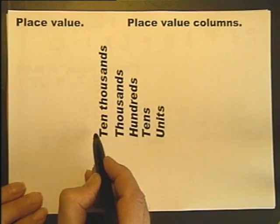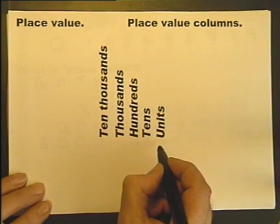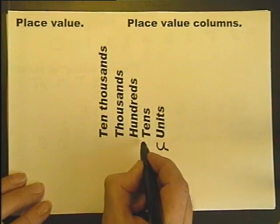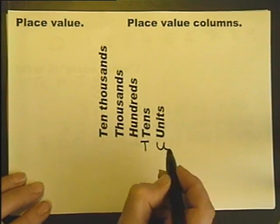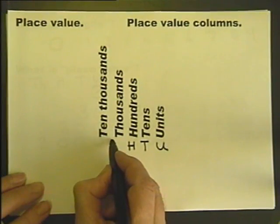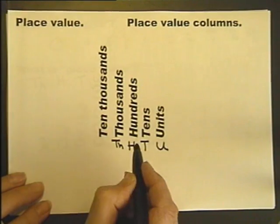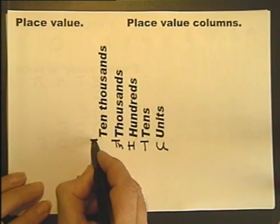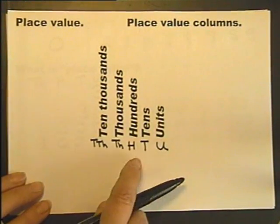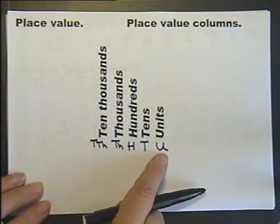We can abbreviate these columns, in other words write them shorter, by just using some letters. So instead of units, we can write just the letter U. Tens, the letter T. Hundreds, the letter H. Thousands, the letter T and an H. And tens of thousands, well we'll have to do it something like this: T, T, and an H. So we've got the hundreds, tens, units, the most commonly known ones. Hundreds, tens, units.